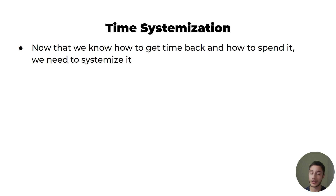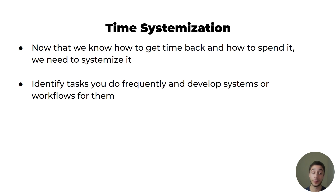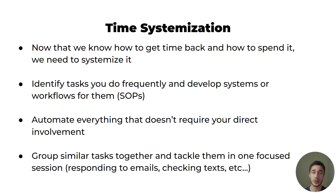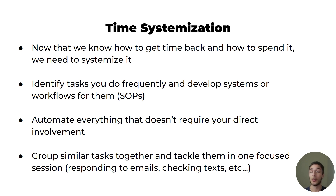Now that we know how to get our time back and how to spend it, we need to systemize it. Identify tasks you do frequently and develop standard operating procedures and workflows for them. Automate everything that doesn't require your direct involvement. Last but not least, group similar tasks and tackle them in one focused block — respond to all emails in one block, check texts in one block, take all your meetings in a row. Try to do things in blocks to prevent your activities from getting jumbled together. That is my entire productivity method from A to Z.